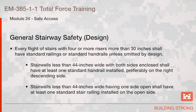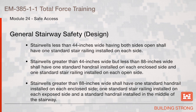Stairways less than 44 inches wide with both sides enclosed: at least one standard handrail shall be installed, preferably on the right descending side. Stairways less than 44 inches wide with one side open: at least one standard stair railing shall be installed on the open side. Stairways less than 44 inches wide with both sides open: one standard stair railing shall be installed on each side. Stairways greater than 44 but less than 88 inches wide: one standard handrail on each enclosed side and one standard stair railing on each open side. Stairways greater than 88 inches wide: one standard handrail on each enclosed side, one standard stair railing on each exposed side, and a standard handrail in the middle.